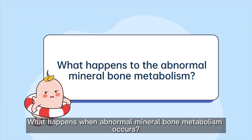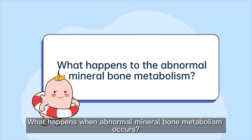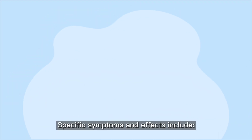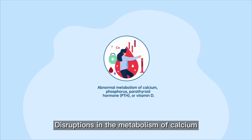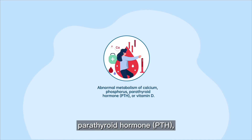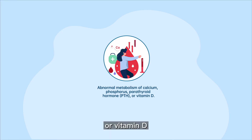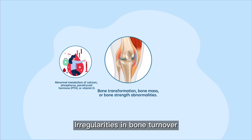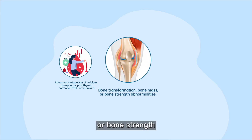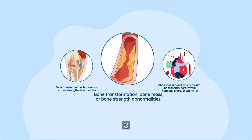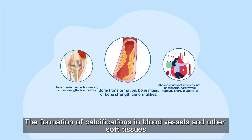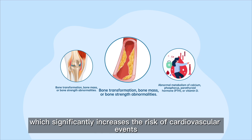What happens when abnormal mineral bone metabolism occurs? Specific symptoms and effects include: first, disruptions in the metabolism of calcium, phosphorus, parathyroid hormone (PTH), or vitamin D. Second, irregularities in bone turnover, bone mass, or bone strength. Third, the formation of calcifications in blood vessels and other soft tissues, which significantly increases the risk of cardiovascular events.